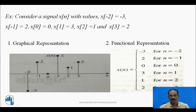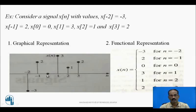Along the x-axis, consider the values of n which vary from -2 to +3. Along the y-axis, take the values of x(n). For example, at n = -2, the corresponding value of x(n) is plotted. Similarly, at n = -1, the corresponding value of x(n) is 2. At n = 0, it is the origin of this sequence, and x(0) = 0, and so on.